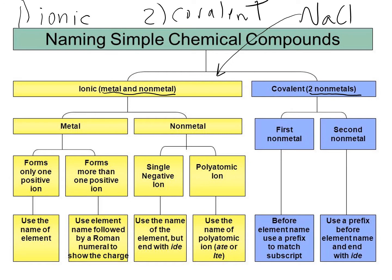If you have a covalent compound, you would follow the set of rules in purple. If you have an ionic compound, we also have two types of ionic. We're going to call them type 1 and type 2.